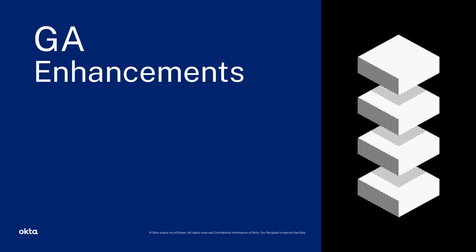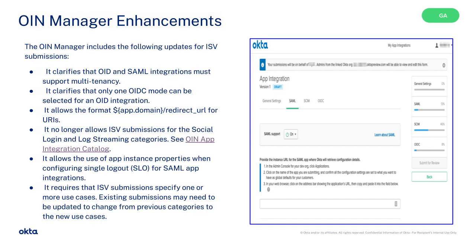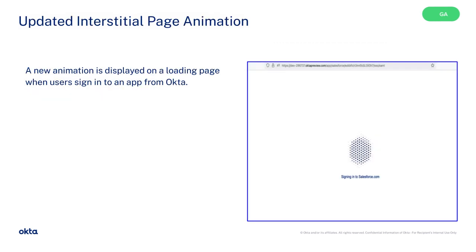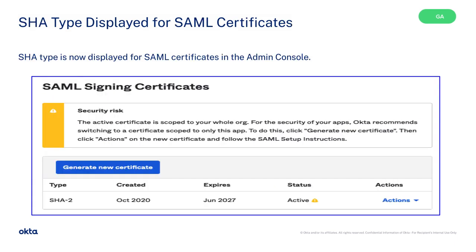Let's move on to GA Enhancements. The Sign In widget now has improved JIT error messages. The new OIN Manager enhancements have a lot of functionality for OIDC and SAML — be sure to review the information below. A new animation is now displayed on a loading page when users sign in to an app from Okta. API Token ID is now displayed under API Tokens for easy tracking. SHA type is now displayed for SAML certificates in the Admin Console.